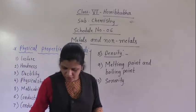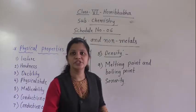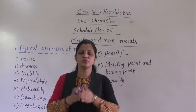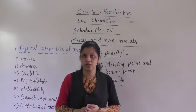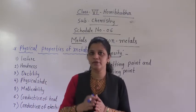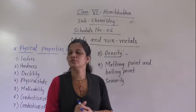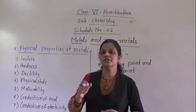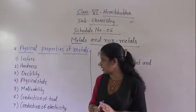Now, in sixth standard we have to learn only the physical properties of metals and non-metals. Look around — this is a plastic material, this bench is made of wood, so many things are made of different substances. We need to identify which are metals with the help of their physical properties. The first physical property is lustrous — lustrous means it has a shine, and mostly all metals have a shine.